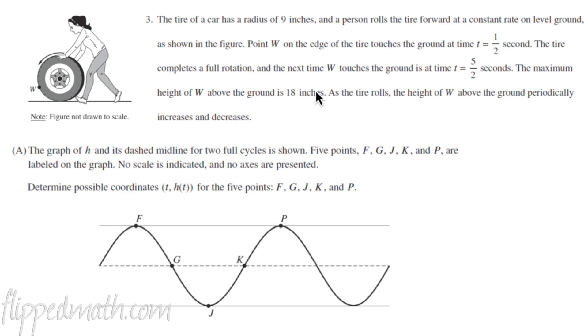So the tire of a car has a radius of nine. My brain is screaming already. They're giving you some information. If the radius is nine, that's going to end up being the amplitude here. I can't help myself. I'm like, oh my God, that's going to be A. I'm going to write A there. We're going to keep reading. A person rolls the tire forward. So here's W, and we're going to roll it forward on level ground.